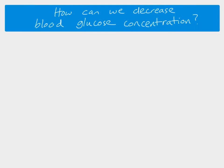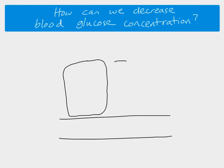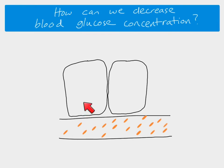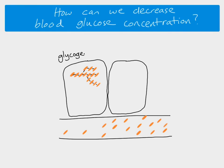After eating a meal, blood glucose concentration increases. To decrease it, cells can take glucose out of the blood. In certain cells such as liver cells, there are stores of glycogen — a molecule made of many glucose units joined together. Glucose can be taken from the blood into these cells and added onto the glycogen molecule, increasing its size.